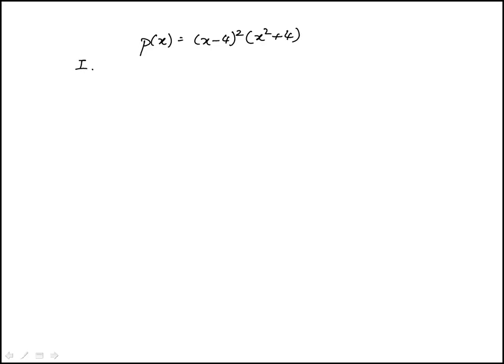The first statement says the polynomial has two imaginary roots. The imaginary roots come from x² + 4 = 0, so x² = -4. We can write this as x² = 4i², where x = ±2i.